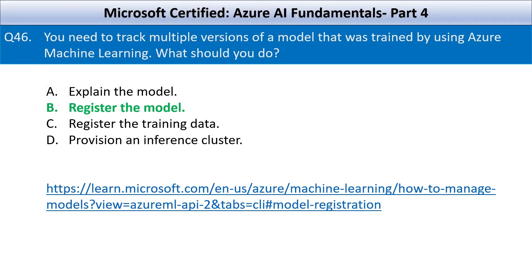Option A, explain the model, refers to model interpretability — understanding how the model makes decisions. Option C, register the training data, helps track datasets, not models. Option D, provision an inference cluster, is used for deploying models for real-time inference. There is a link on your screen — go through it to understand more about how model registration can be done in Azure Machine Learning.